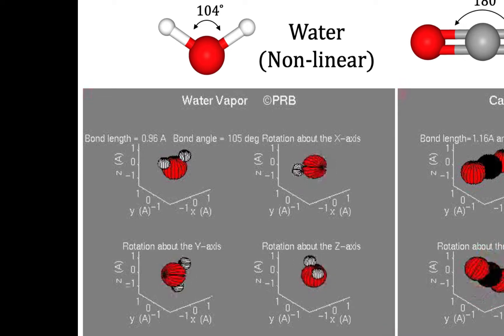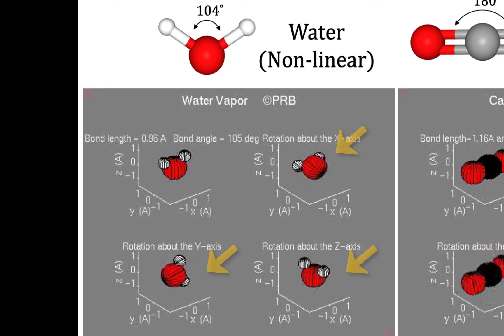These include rotation about the X axis, the Y axis, and the Z axis. In all three of these rotational modes, we see the atoms changing position, and so all three modes are useful for storing energy.